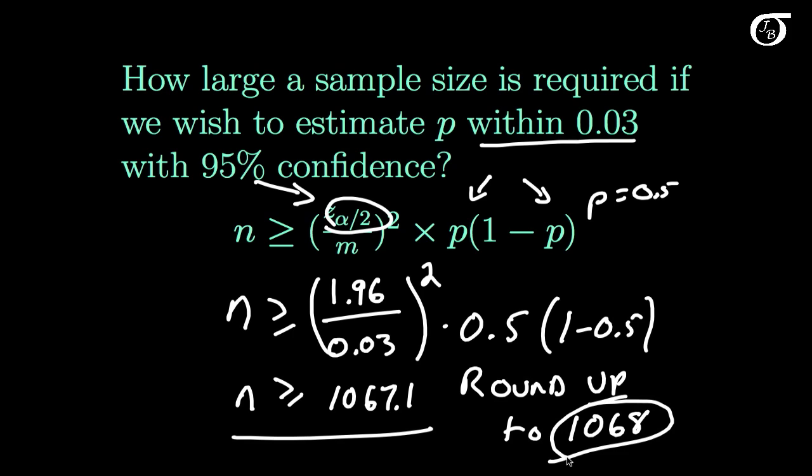That is the minimum sample size required in order to estimate P within 0.03 with 95% confidence. And you might see in a lot of political polls and this type of thing that they sample around a thousand people and then give you a margin of error of close to plus or minus 3%.